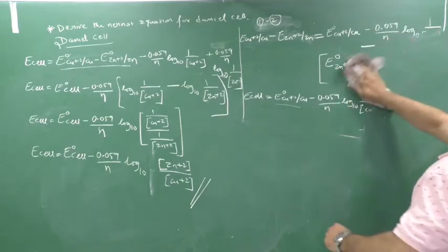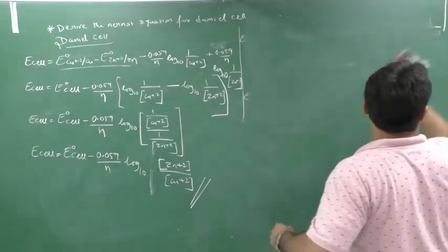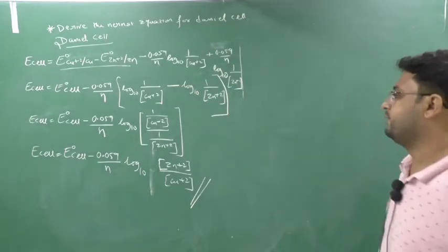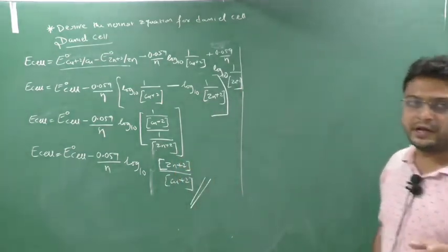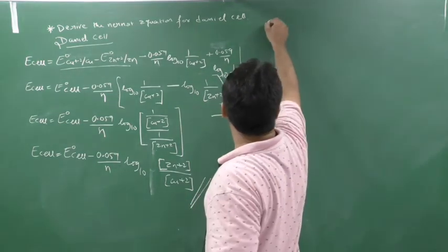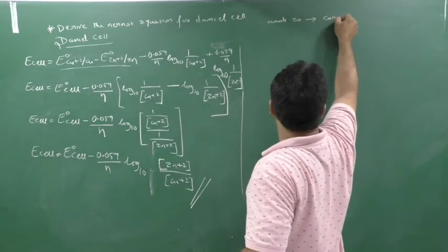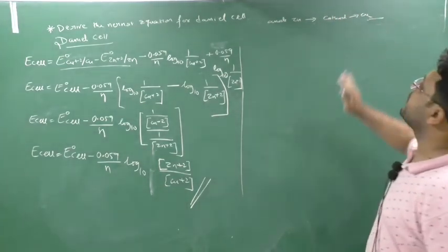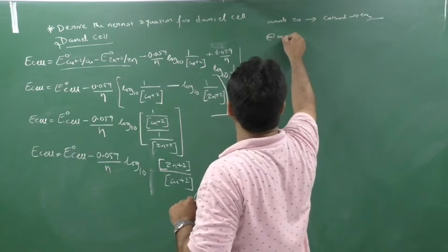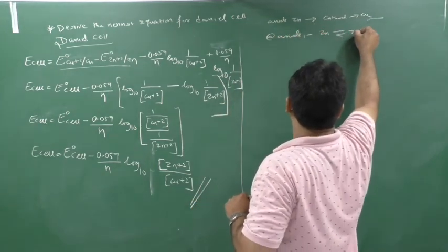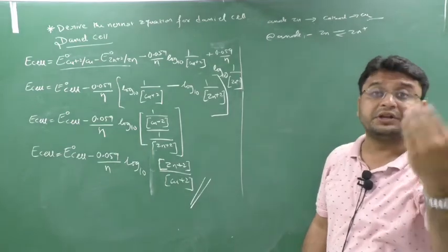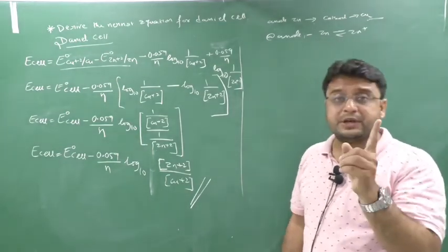Now I will give a shortcut to write the Nernst equation directly from the net reaction. For the Daniel cell, at anode zinc undergoes oxidation and at cathode copper is reduced. Write the net reaction first. At anode: Zn → Zn²⁺ + 2e⁻. At cathode: Cu²⁺ + 2e⁻ → Cu. Number of electrons transferred is 2. Then directly write the Nernst equation using product over reactant from this net reaction.